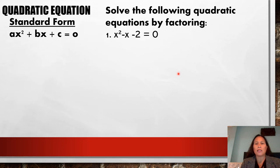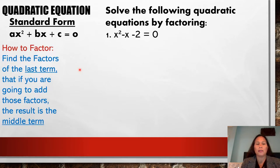Let's have an example. We have x squared minus x minus 2 is equal to zero. This given is already in standard form. So, what you need to do first is find the factors of the last term.